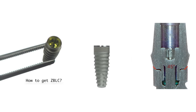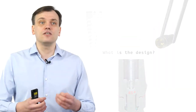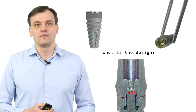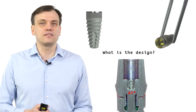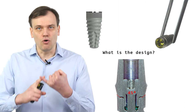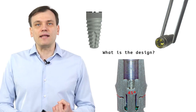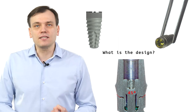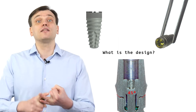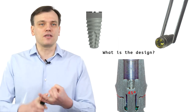The first step in developing zero bone loss concepts, after looking at tissue thickness, is to understand the implant design. What do we mean by understanding the design? We need to know: does the implant have platform switching? What kind of connection does it have? What are the connection degrees?